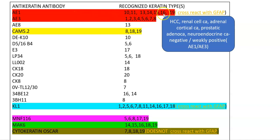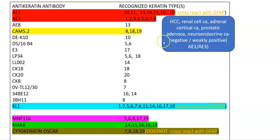AE1 and AE3 cross-react with GFAP. Hepatocellular carcinoma, renal cell carcinoma, renal cortical carcinoma, prostatic adenocarcinoma, and neuroendocrine carcinoma may show weakly positive AE1 or AE3 staining, or may be negative. Another antibody for cytokeratin is CAM 5.2, which is reactive with cytokeratin 8, 18, and 19.